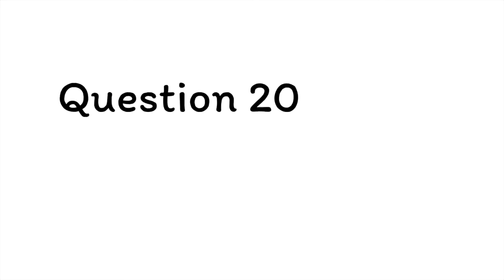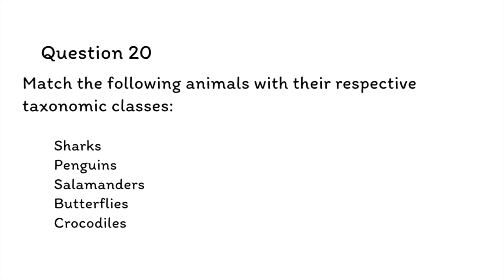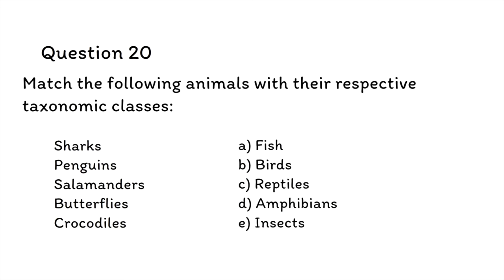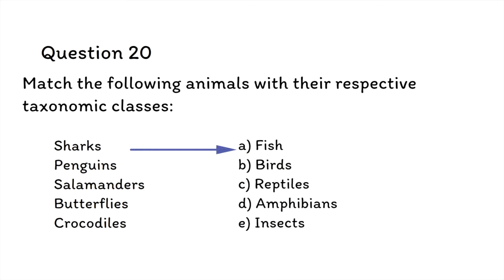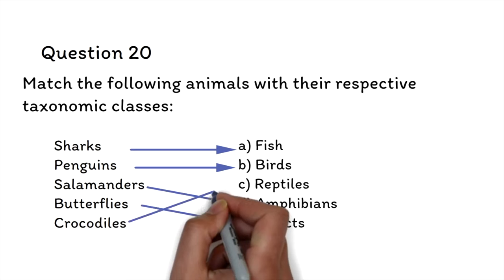Question 20: Match the following animals with their respective taxonomic classes: Sharks, Penguins, Salamanders, Butterflies, Crocodiles. For questions on taxonomy, the animals used are usually going to be familiar animals — start by matching the ones that are obvious to you. Sharks are a type of fish. Penguins are birds. Salamanders are amphibians. Butterflies are insects. And crocodiles are reptiles.